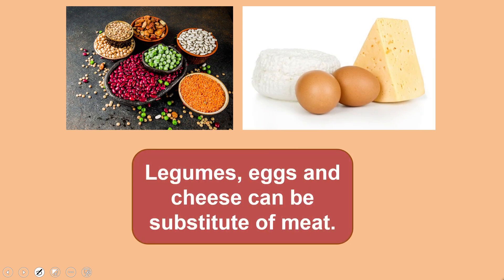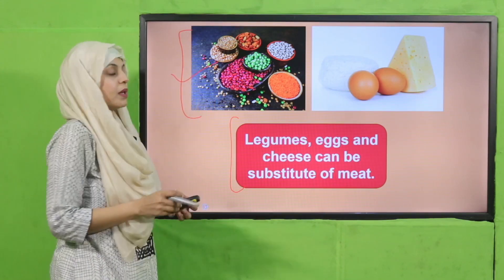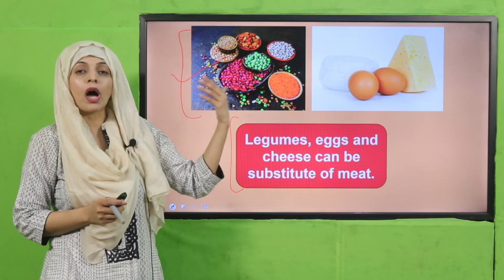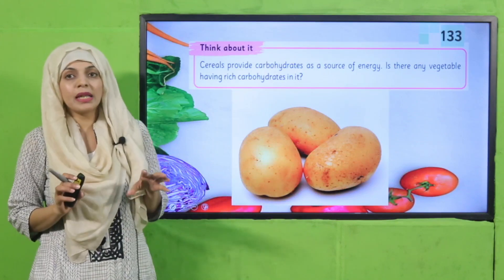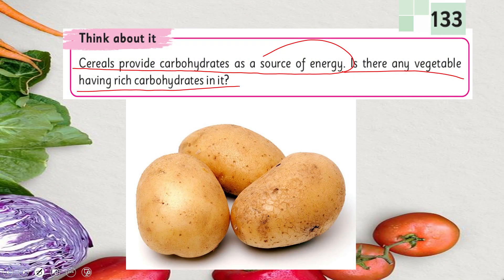Legumes, eggs and cheese can be substitutes for meat. Now, cereals provide carbohydrates as a source of energy. Is there any vegetable rich in carbohydrates? Yes — potato! Potatoes are very rich in carbohydrates. In addition, sweet potatoes are also very rich in carbohydrates and are a great source of energy.